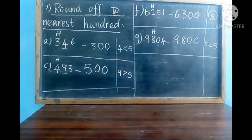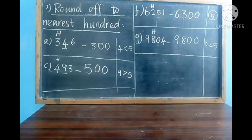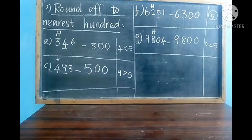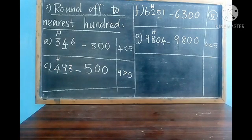F answer: 2 is in the hundreds place, so write H above 2. In the tens place, 5 is there. If the tens place value is 5 or greater than 5, we move to the next 100. Here exactly 5 is in the tens place, so we write the next 100. There are 200s in the question, so our answer should be 6300. The thousands place has 6, which remains as it is.